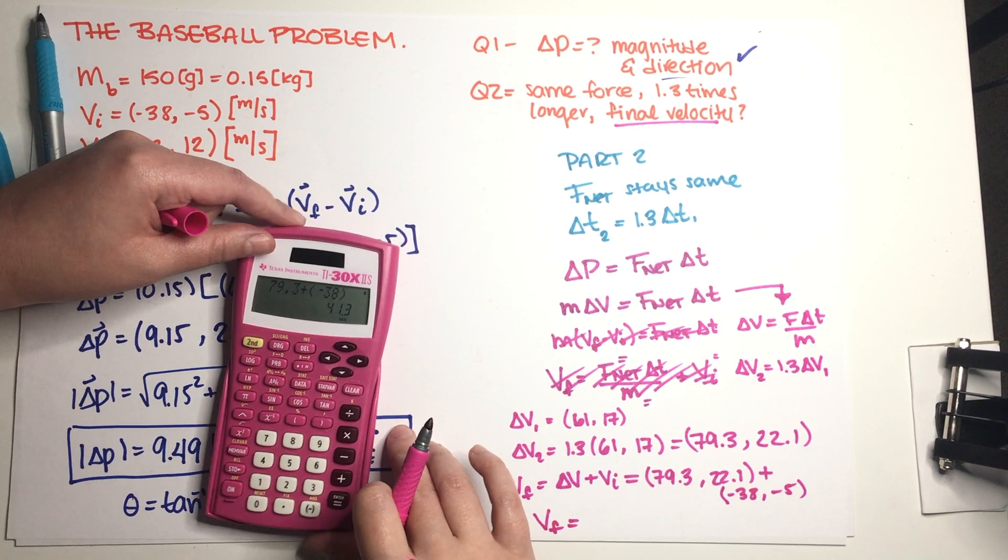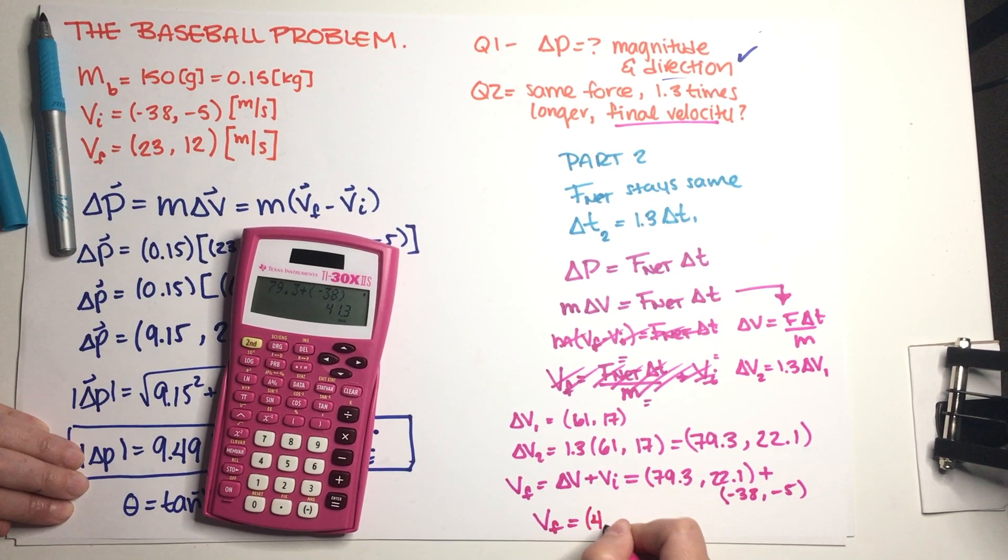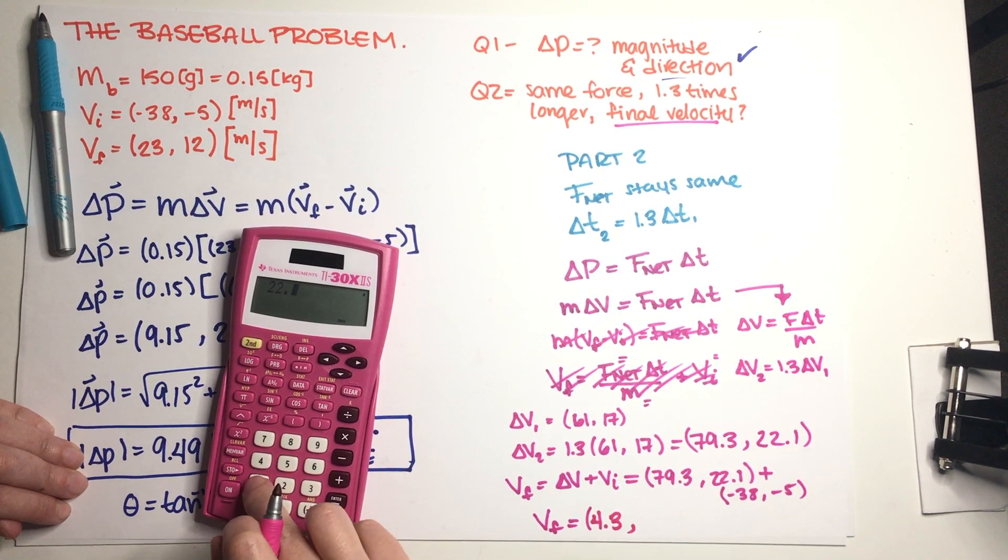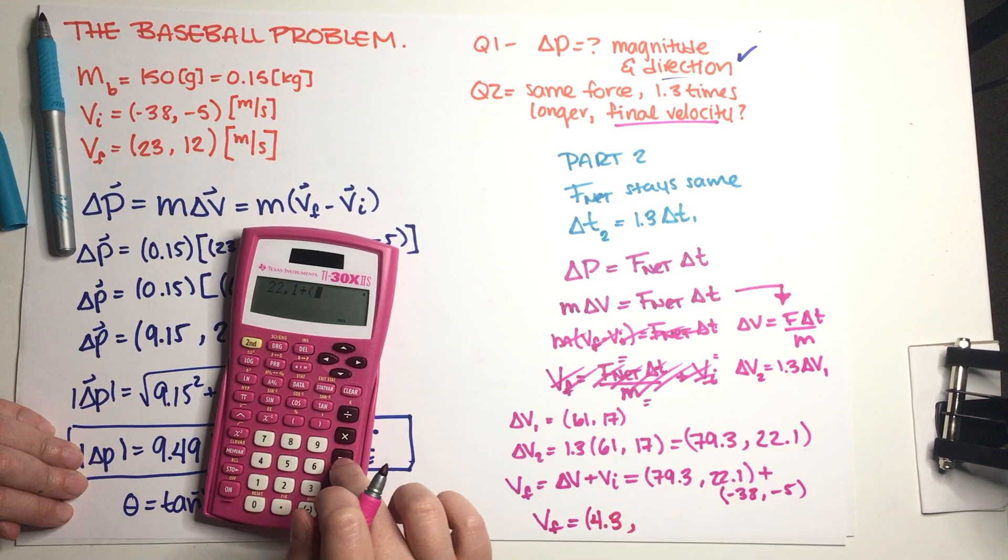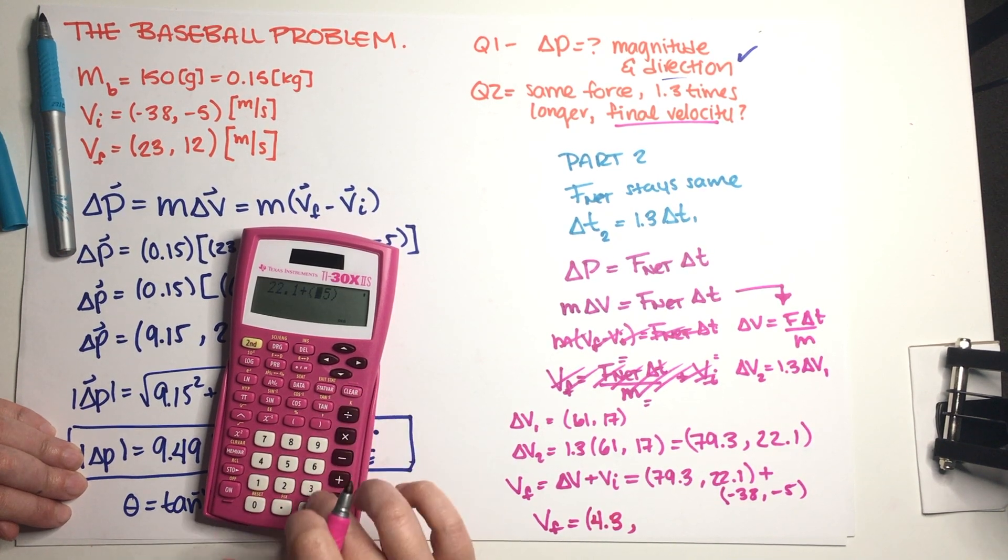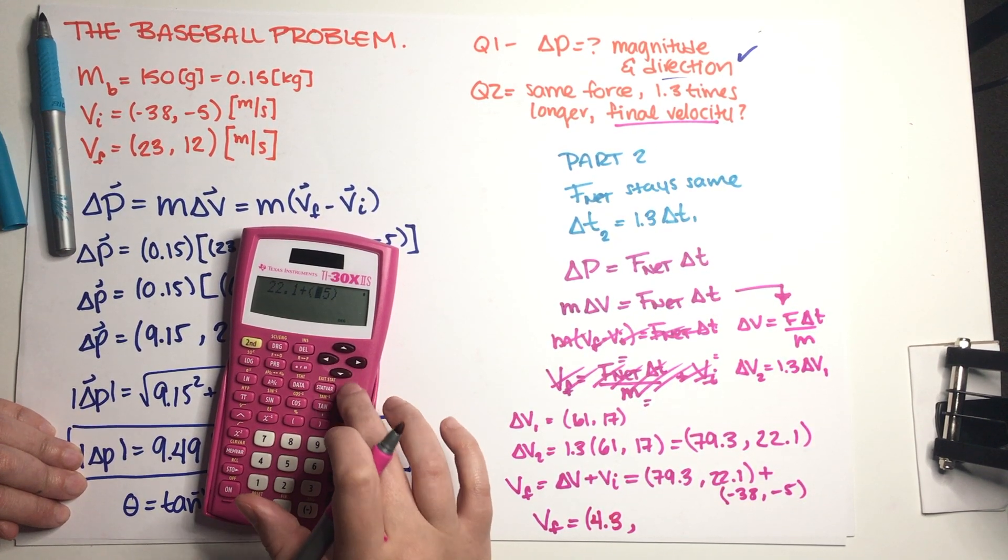And that is going to give me my v final. So we have 79.3 plus minus 38 and that is equal to 41.3.